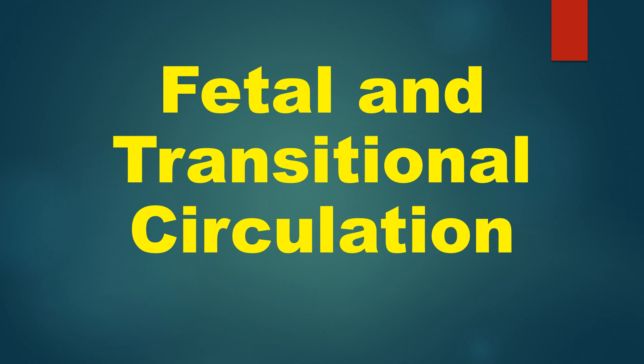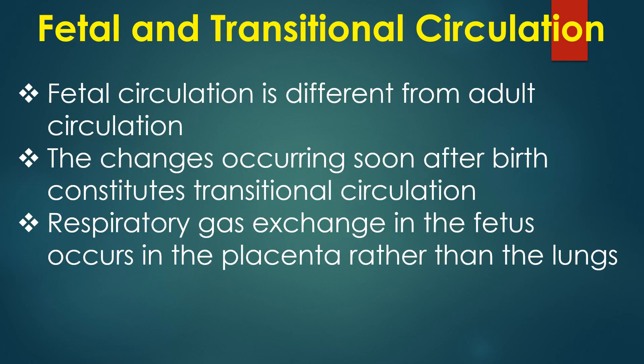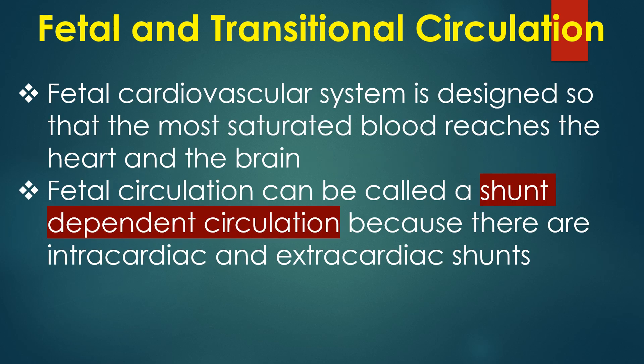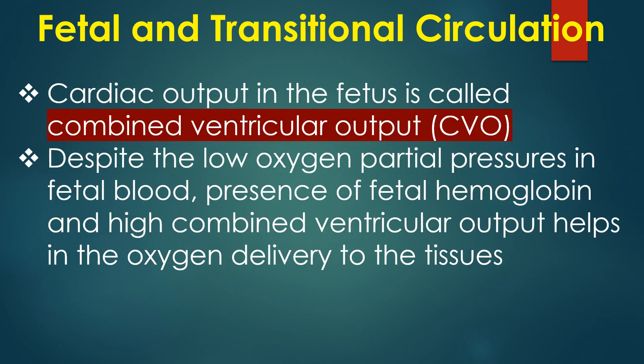Discussion on fetal and transitional circulation. Fetal circulation is different from adult circulation; changes occurring soon after birth constitute transitional circulation. Respiratory gas exchange in the fetus occurs in the placenta rather than the lungs. The fetal cardiovascular system is designed so that most saturated blood reaches the heart and the brain. Fetal circulation can be called a shunt-dependent circulation because there are intracardiac and extracardiac shunts. Cardiac output in the fetus is called combined ventricular output. Despite low oxygen partial pressures in fetal blood, fetal hemoglobin and high combined ventricular output help oxygen delivery to tissues.